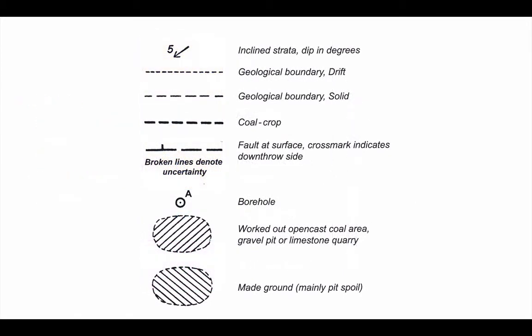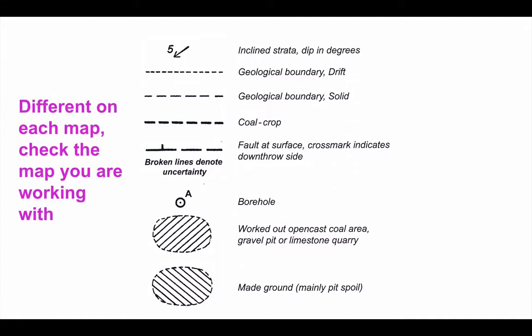The final part of the key to any geological map covers geological features, and these are always shown in black and white. There is a variety used over time on geological maps. Common features include, for example, where we're unsure of a bed boundary — it tends to be drawn in dashed lines — whereas where we're sure of a boundary between beds, it might be a solid line. It's important to check the specific map you're working with, and this will always be given to you for an exam map.